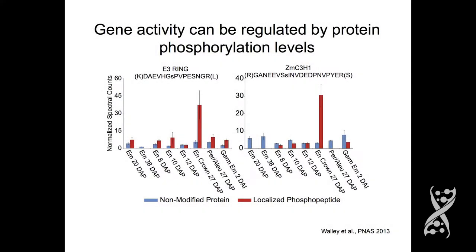Gene activity can also be regulated by post-translational modifications. Here I show where we measured the abundance of protein during different stages of seed development and phosphorylation in these two cases — phosphorylation at this site is known to regulate these particular proteins. So you can see measuring protein abundance alone, you wouldn't recognize that this particular protein is really only active at one stage late in endosperm development, likewise over here. So these post-translational modifications are also important for measuring gene activity.